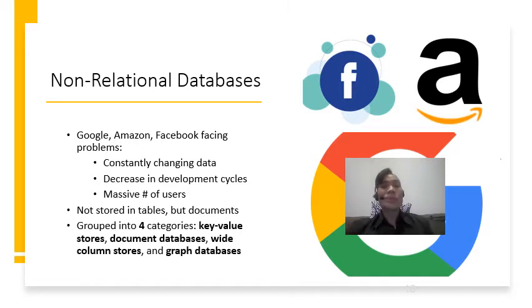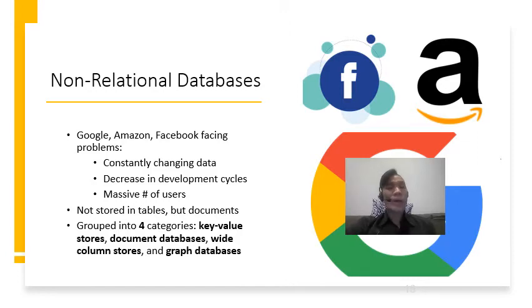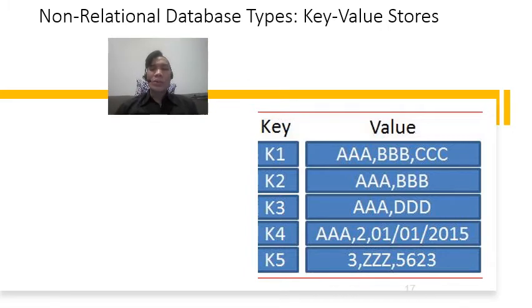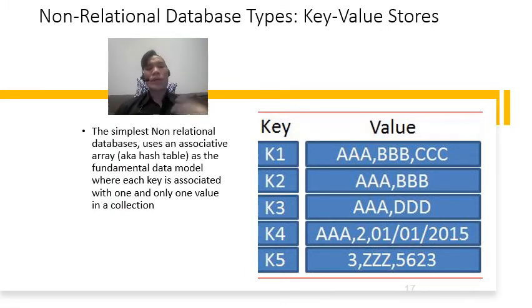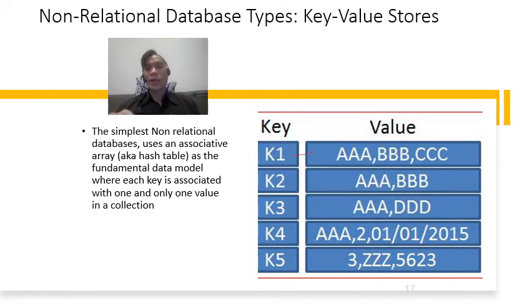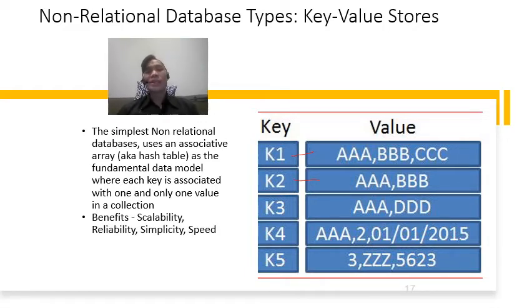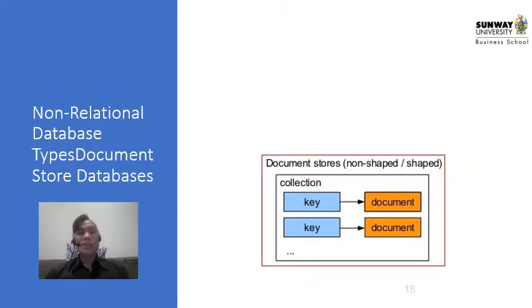The information stored on these websites is not stored in tables but in documents, which are created each time new data is generated. Non-relational databases can be grouped into four different categories: key-value stores, document databases, wide column stores, and graph databases. For key-value stores, this is the simplest type of non-relational database. It uses an associative array — for example a hash table — as the fundamental data model, where each key is associated with only one value in the collection. For example, K1 maps to a combination of values and K2 to another. The benefits of this approach are that it is scalable, reliable, simple, and fast.